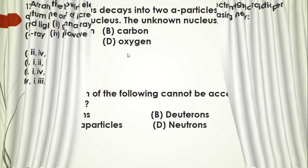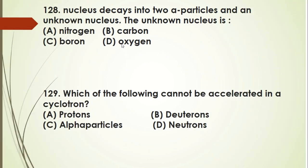Question 128: the nucleus neon-22 decays into two alpha particles and an unknown nucleus. We write the decay relation: neon-22 breaks into two alpha particles (He-4) plus an unknown nucleus.